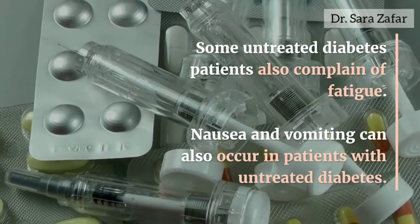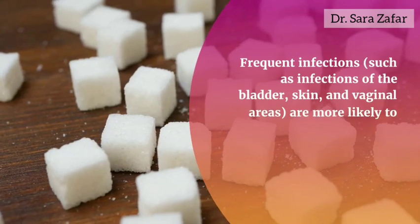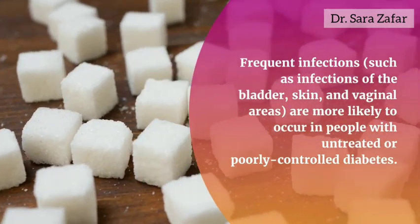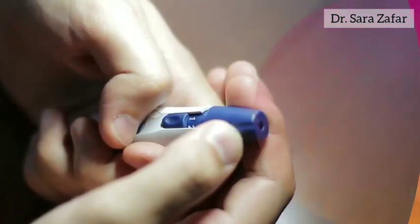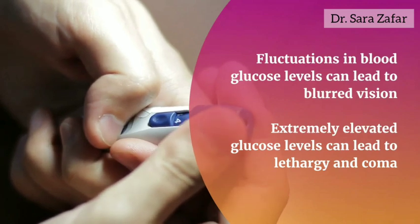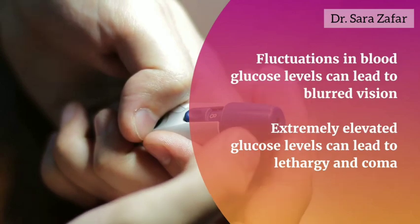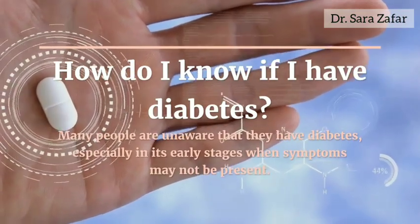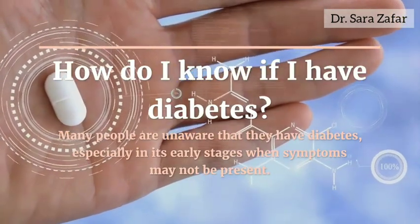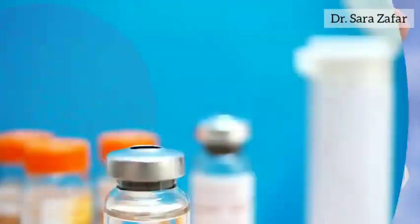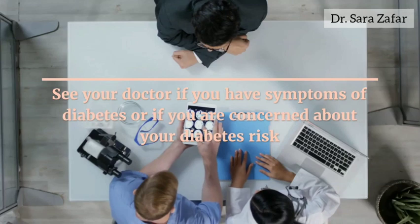Some untreated diabetes patients also complain of fatigue. Nausea and vomiting can also occur. Frequent infections such as infections of the bladder, skin, and vaginal areas are more likely to occur in people with untreated or poorly controlled diabetes. Fluctuations in blood glucose levels can lead to blurred vision, and an elevated glucose level can lead to lethargy and coma. Many people are unaware they have diabetes, especially in its early stages when symptoms may not be present, and there is no definite way to know without undergoing blood tests.